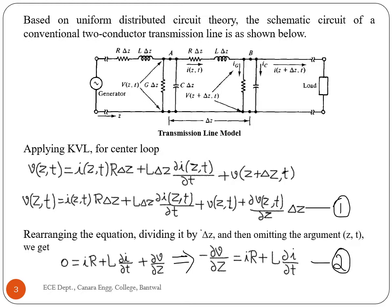It is assumed that wave propagation takes place in the positive Z direction. To get the transmission line equation in voltage form, apply KVL to the center loop. The voltage at the input point is V(z, t), which equals the current in the center loop I(z, t) times R·delta·z plus the inductance component, plus the voltage at the far point V(z+delta·z, t).